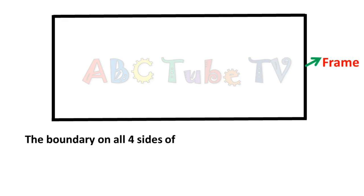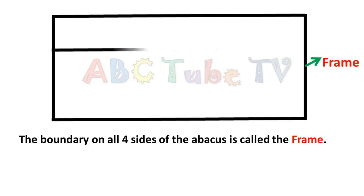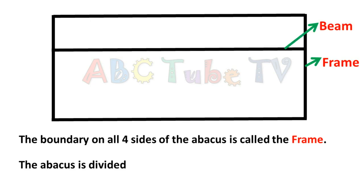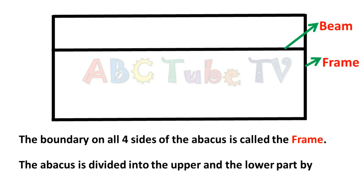The boundary on all four sides of the abacus is called the frame. The abacus is divided into the upper and the lower part by a horizontal bar called the beam.